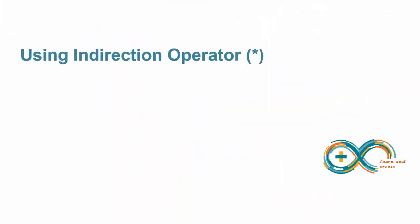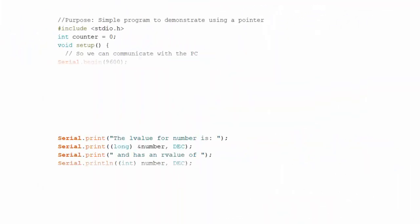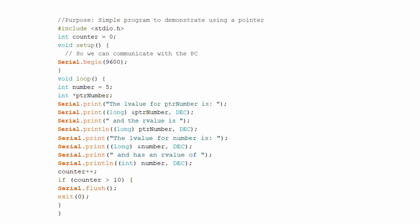To understand the use of the indirection operator, consider the following code. This code simply displays information about the pointer variable and variable number which we used in a code example before. In this program, variable number is initialized to 5, and pointer variable with integer type specifier is defined but not initialized.